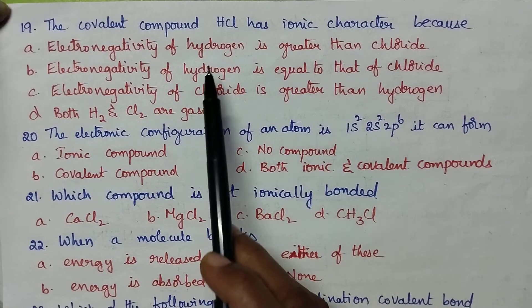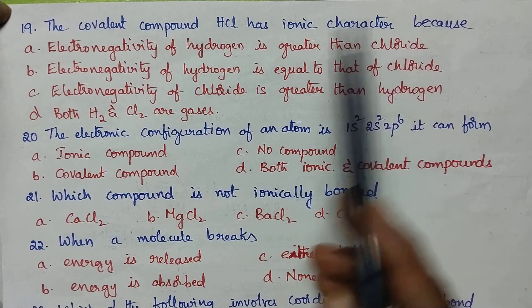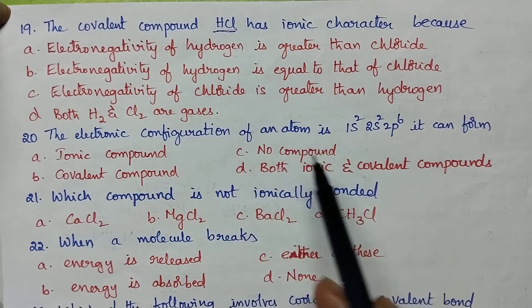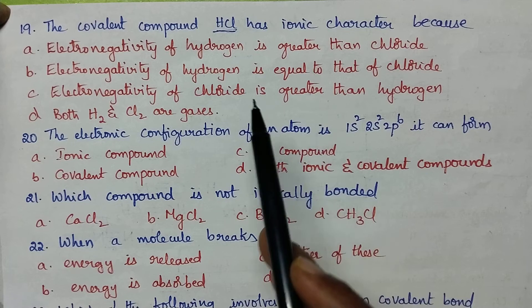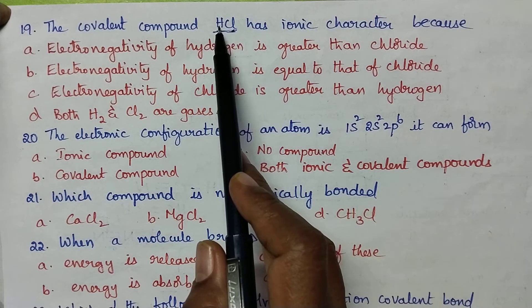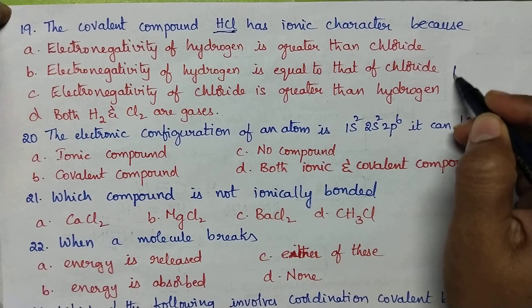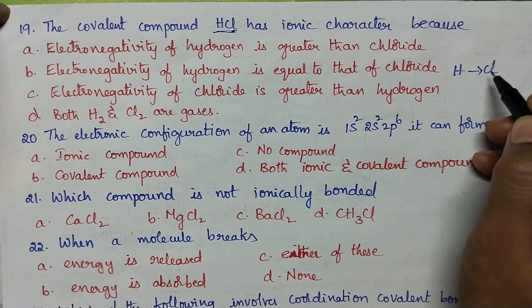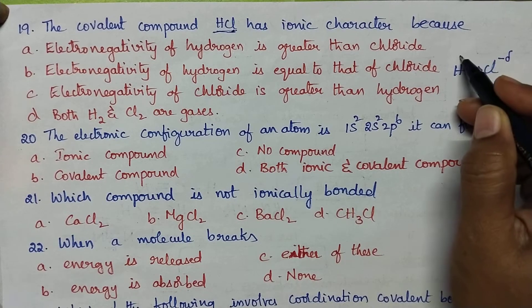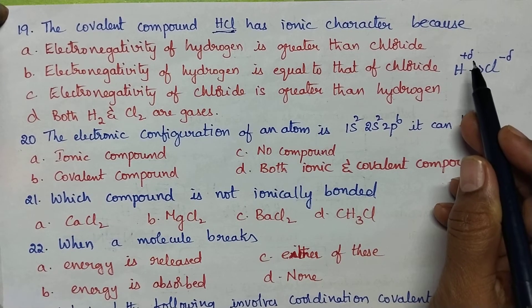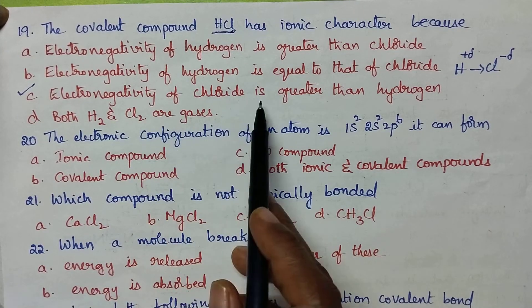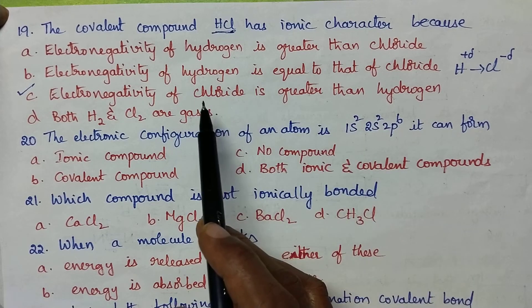The covalent compound HCl has ionic character because HCl has a polar covalent bond, so it exhibits ionic character. This ionic character is mainly due to the fact that the electronegativity of chlorine is greater than that of hydrogen. In HCl, electrons are more attracted towards the chlorine atom, so chlorine gains a partial negative charge whereas hydrogen gains a partial positive charge. So option C is the right answer.